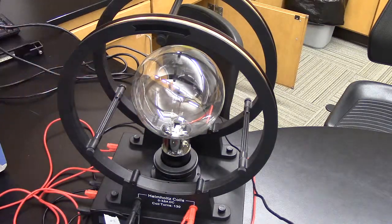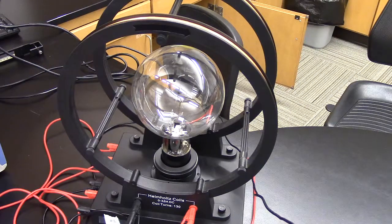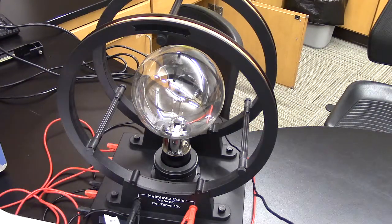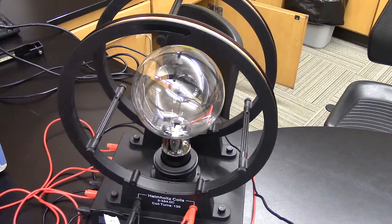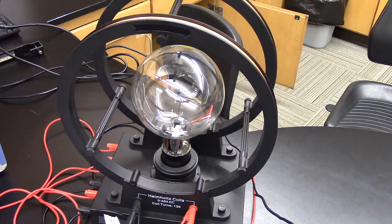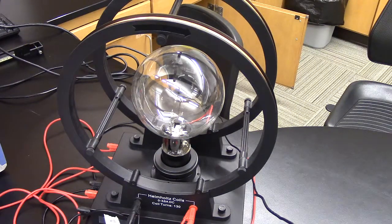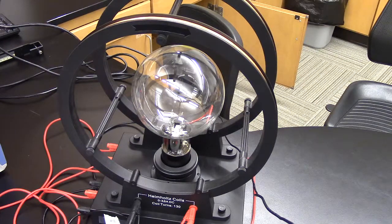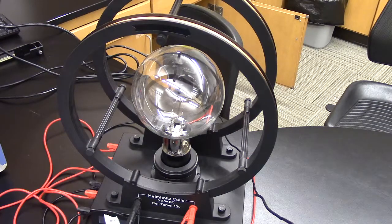So using these Helmholtz coils, we create a pretty uniform magnetic field in that region. This is the magnetic equivalent of a parallel plate capacitor, which produces a uniform electric field in that region.